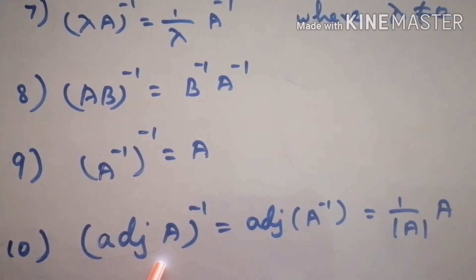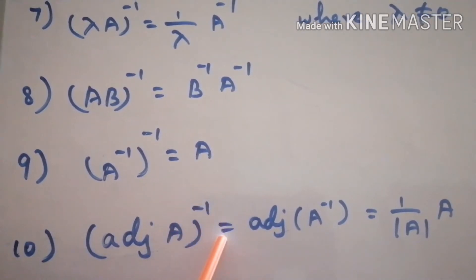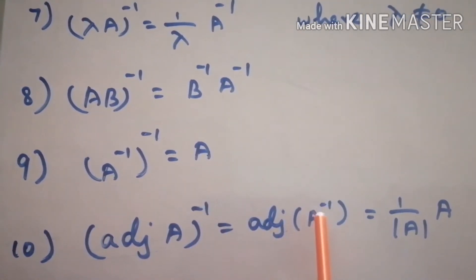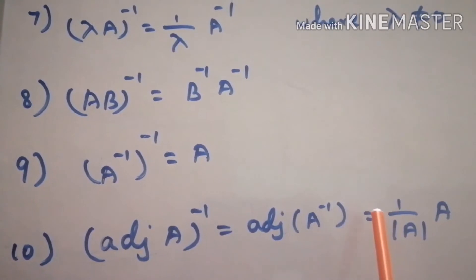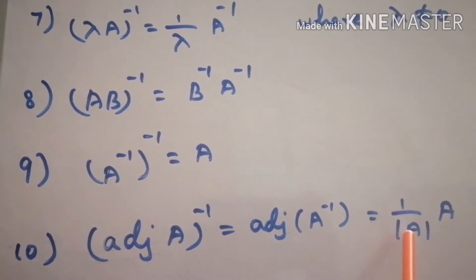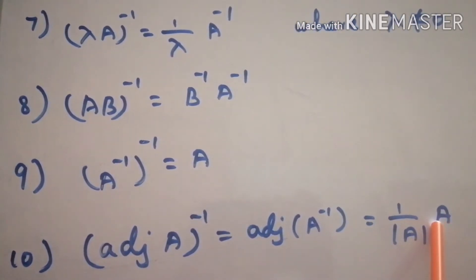Adjoint of A the whole inverse is equal to adjoint of A inverse, which is equal to 1 by determinant of A into A.